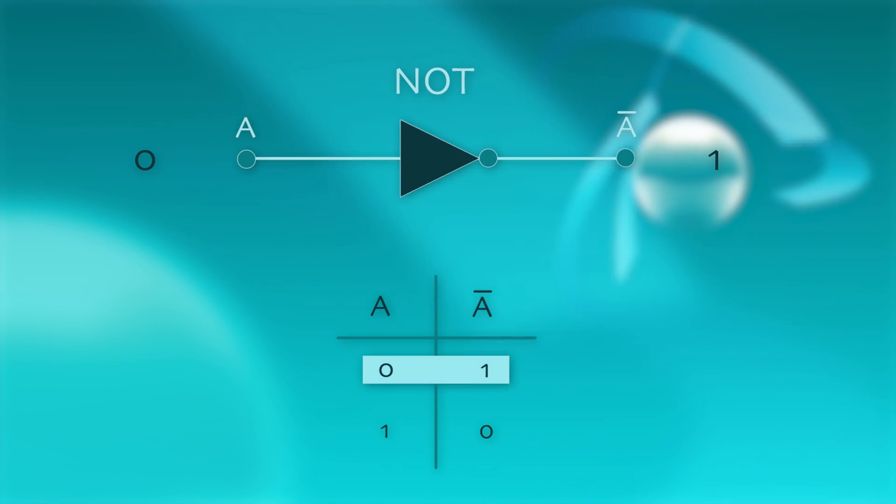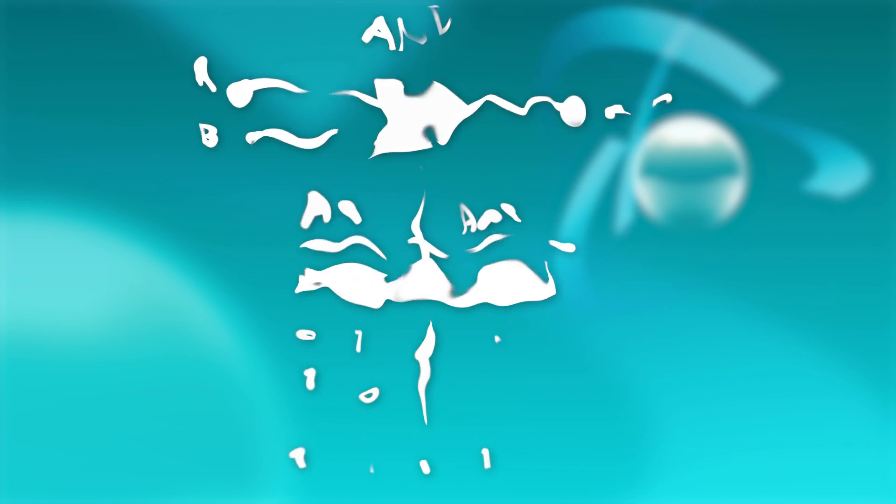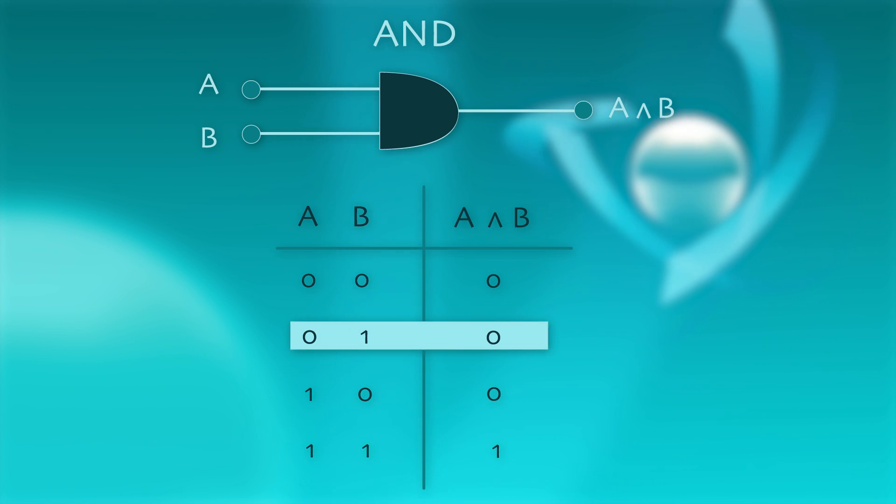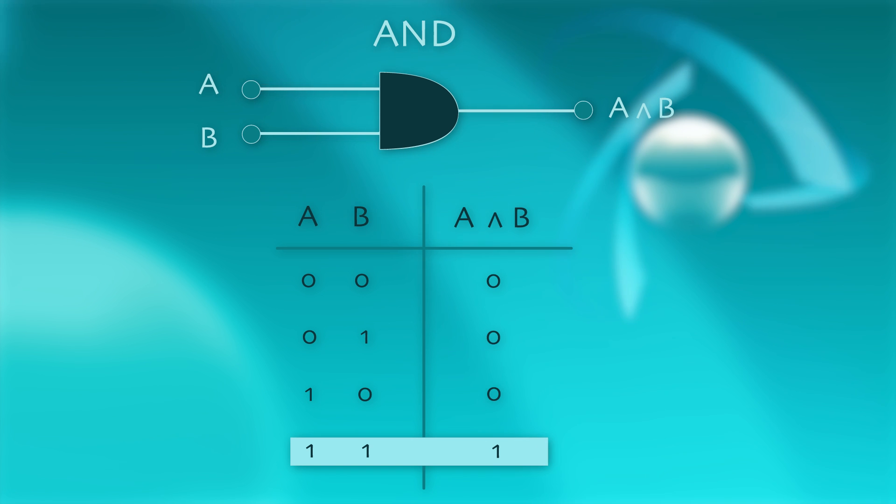The way digital data is actually processed within a computer is by performing logic operations. The simplest one is on a single bit. It's called the NOT operation and simply flips the value of the bit. Zero becomes one and one becomes zero. With two bits I can do for example the AND operation. This is the operation that returns one if both inputs are one.